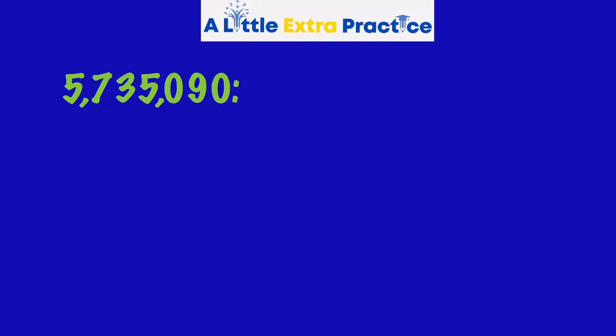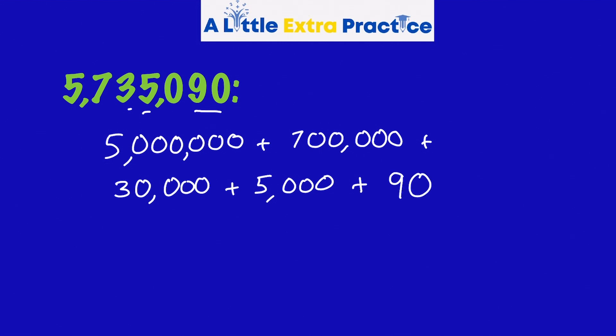The next number, 5,735,090. As I start on this one, 5 is going to be in the millions place. Put my commas in to separate the periods. Plus, 7 in the 100,000s. Plus, there's a 3 in the 10,000s, so that makes 30,000. Plus, a 5 in the 1,000s. Plus, nothing in the 100s, and then there's a 9 in the 10s, 90. And nothing in the 1s. So I am finished.